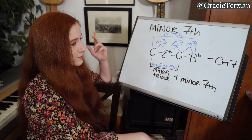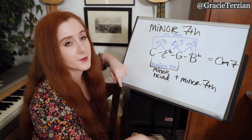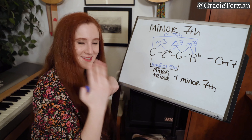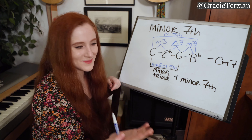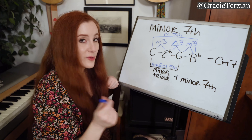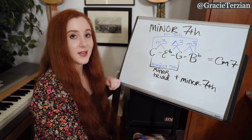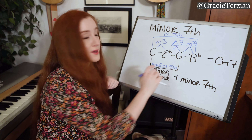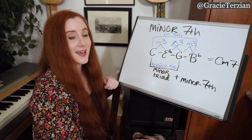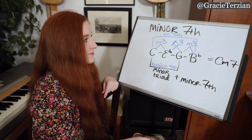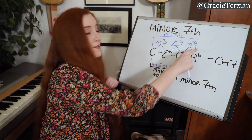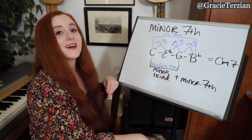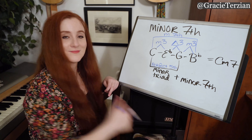There aren't any new interval distances in this chord as far as half steps are concerned, so let me quiz you. How many half steps in a minor third? Three. Major third? Four. Perfect fifth? Seven. And a minor seventh? From C to B flat, that is ten half steps.